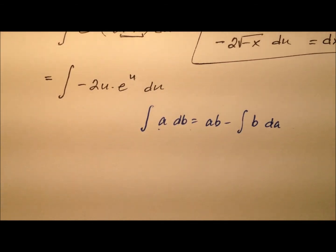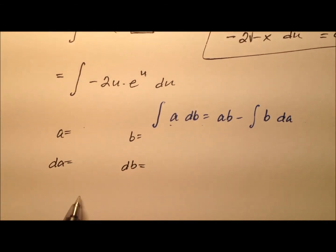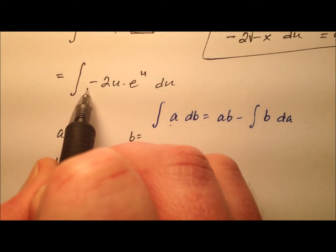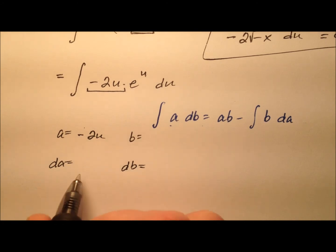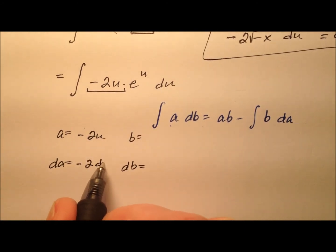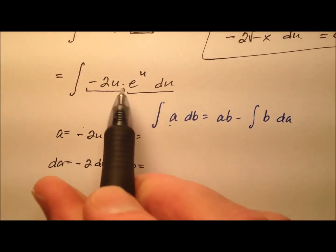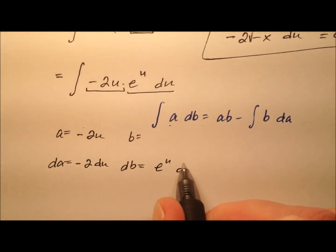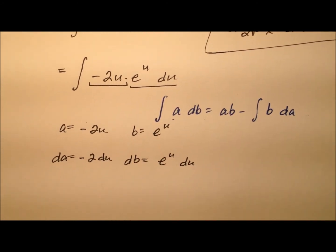So we need to get an a and a db from this integral here. That will work nicely. So the a is what we're going to differentiate. So it looks like this negative 2u would be good because then we'll just have negative 2 du. And then the other part then, this e to the u du will be our db, which when we integrate, we'll just have e to the u.